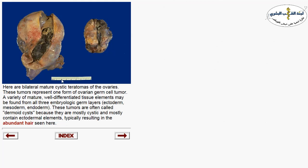The most common germ cell tumor of the ovary is the mature cystic teratoma. Teratoma contains tissue from at least two out of three germ cell layers: ectoderm, mesoderm, and endoderm. It can contain hair, teeth, bone, cartilage, thyroid, and mucinous tissue — anything can be found in teratomas.